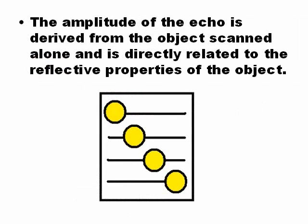The assumption is that the amplitude of the echo depends only on the properties of the object. This is not always true — it also depends on the time gain compensation and the focal area.